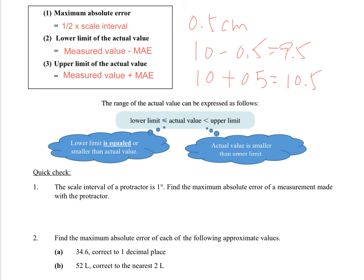So let's have a quick check whether you understand what is the meaning of maximum absolute error. So we would like to find out if the scale interval is 1 degree for the protractor, find out the maximum absolute error. So if we apply this equation, which is 1 over 2 times the scale interval, this time would be 1 degree. So times 1 degree, that would become 0.5, any unit, degree for sure. Done. Remember to write down the subject, maximum, you can write down short form, it's okay.